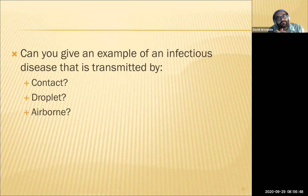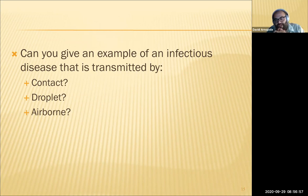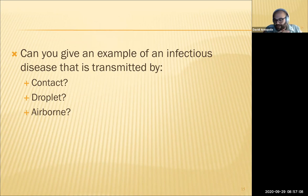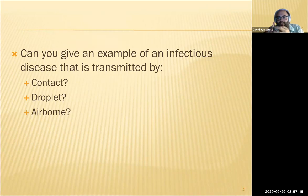Droplet precautions are for diseases that go into the air but stay moist with droplets: influenza, COVID-19 (currently classified as droplet), whooping cough, pertussis, pneumonia, and bacterial meningitis. TB is not contact or droplet — it goes under airborne. COVID-19 is going back and forth between droplet and airborne depending on current research.